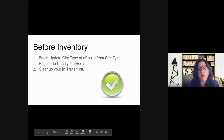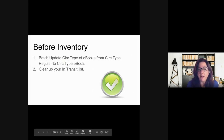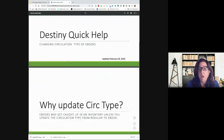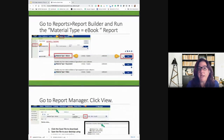Now, before you do an inventory, something that you're really going to want to do so that you don't lose your ebooks in your inventory: you're going to need to batch update the circ type of ebooks from circ type regular to circ type ebook. You're also going to want to clean up your in-transit list. To batch update those ebooks, you're going to go to Reports, Report Builder, and run the material type equals ebook report.